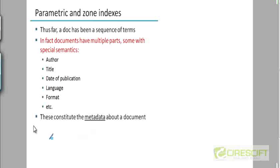The next technique we are going to look at is called parametric and zone indexes. This is actually not an optimization per se. It's a way to do semi-structured search. If you remember from chapter 1, we talked about real data not exactly being unstructured but being semi-structured. Even a PowerPoint slide has a title field, bullet points, and smaller bullet points under that. Your corpus is going to have some kind of a structure. Even HTML and XML documents will have tags which impose some kind of structure on the document.